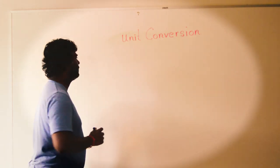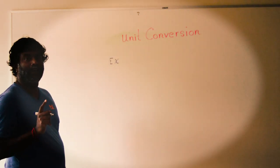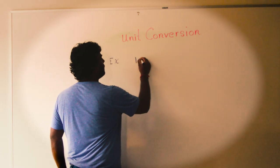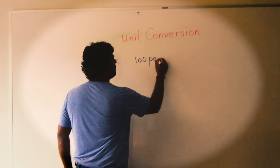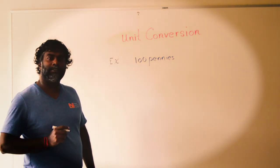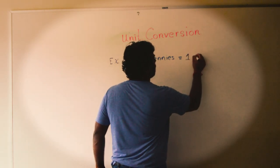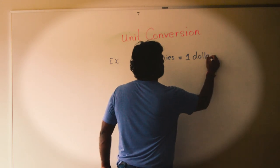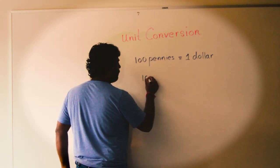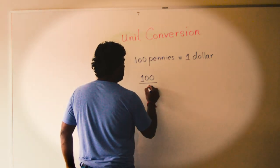Just an example — think about something you guys use every day: money. Think about if you have 100 pennies, that is equal to how many dollars? Everyone knows — it's equal to one dollar. So if you have 100 pennies, every single time, it's equal to a dollar.